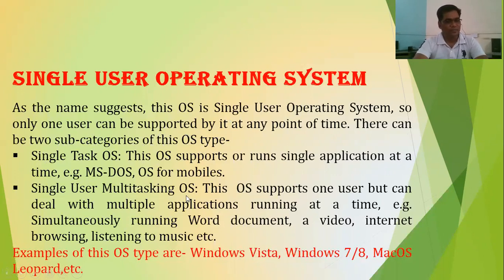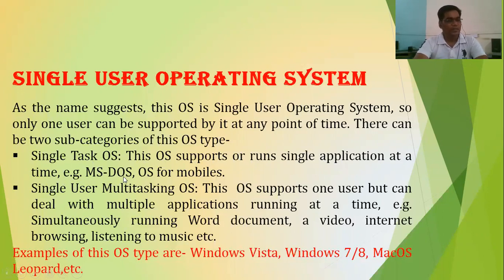You have to understand the difference: single user single task, versus single user but multi-task. Single task OS means only one task can be performed — this OS supports or runs a single application at a time. For example, MS-DOS, Microsoft DOS, was an initial operating system developed by Microsoft, and OS for mobiles.